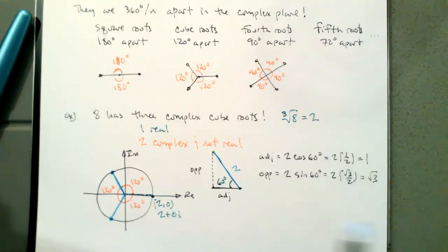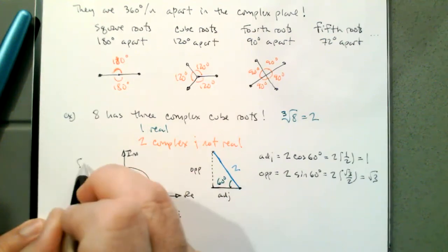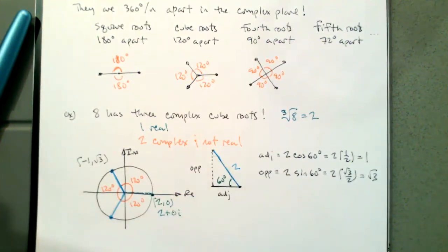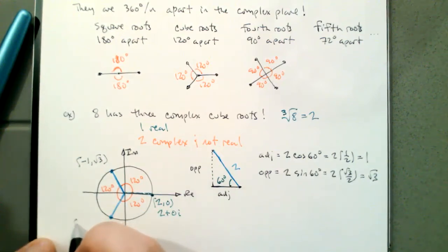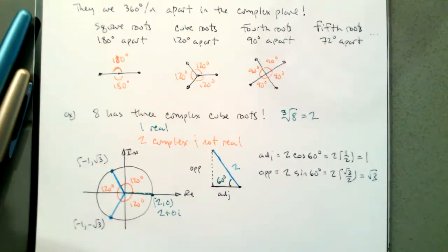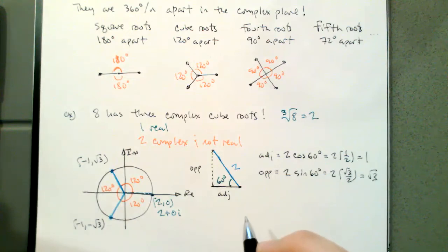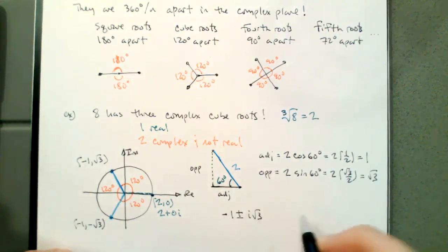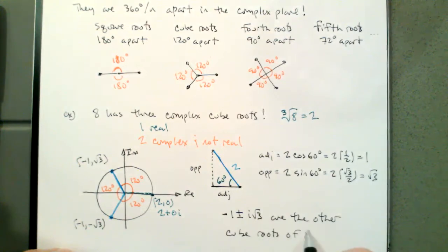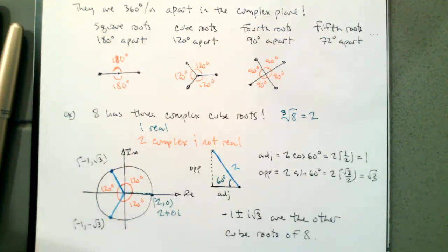We notice that we're in the second quadrant where cosine is negative, so the x-coordinate is negative 1 and the y-coordinate is positive square root of 3. For the point in the third quadrant, we just flip this over — the x-coordinate is still negative 1 but the y-coordinate is negative root 3. So the two complex cube roots of 8 are negative 1 plus i times root 3, and negative 1 minus i times root 3, since those are the points on the circle of radius 2 that are 120 degrees from the point (2, 0).